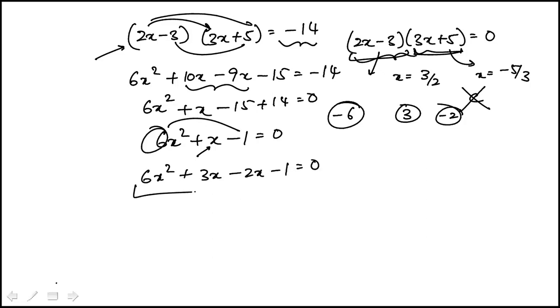So you rewrite that middle term using those two numbers. And then you take each term in these first two terms in pair and factor out the largest common term. And for the second set, you have to factor out something so that you end up with 2x plus 1 in the parentheses. And notice if I pull out a minus 1, I get exactly that same term. Then you pull out 2x plus 1, you get 3x minus 1.